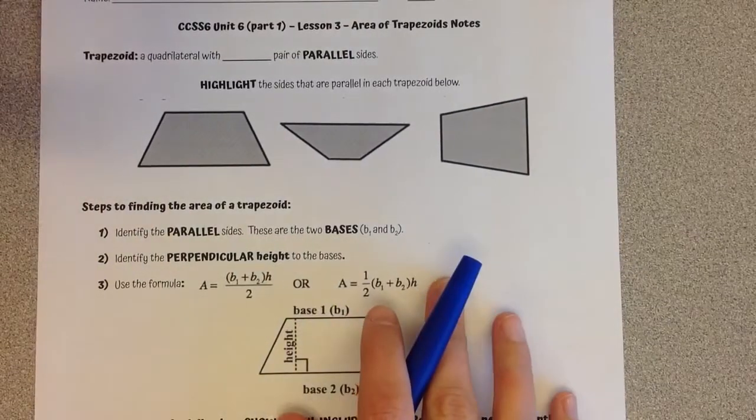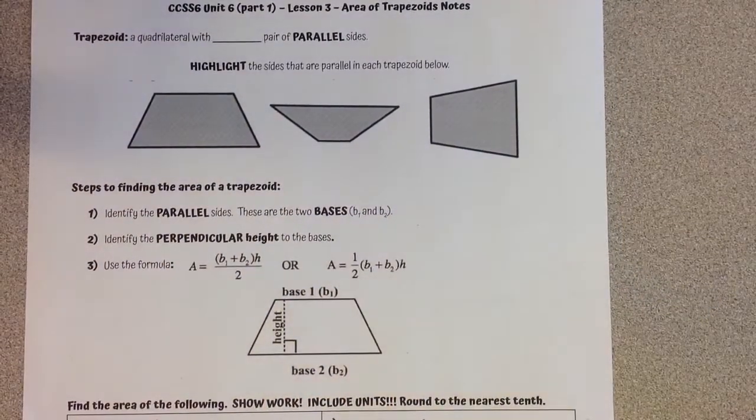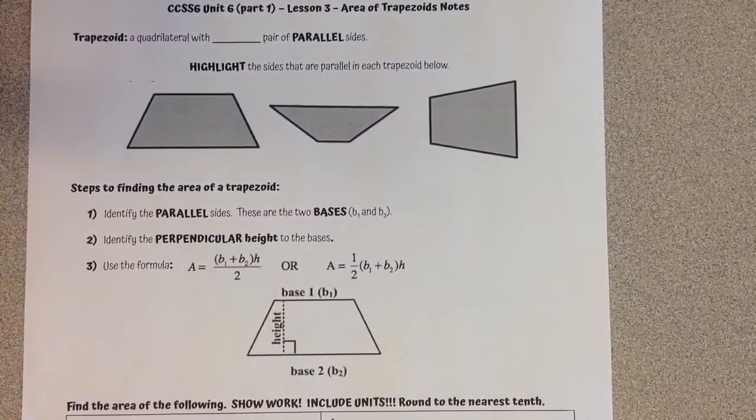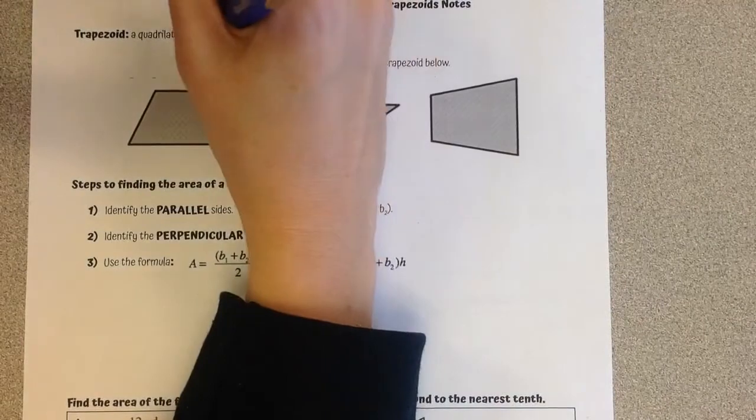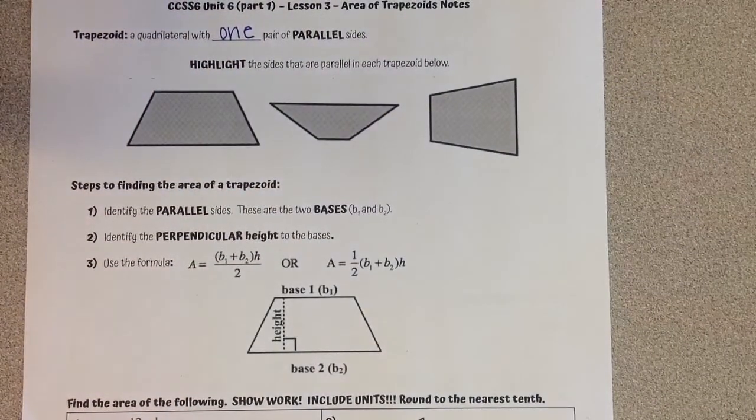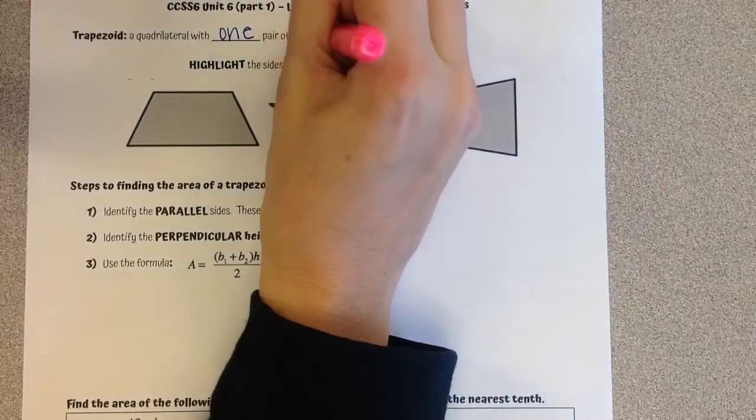Today, we're going to talk about the area of trapezoids. First off, we need to remember what a trapezoid is. A trapezoid is a quadrilateral with one pair of parallel sides.